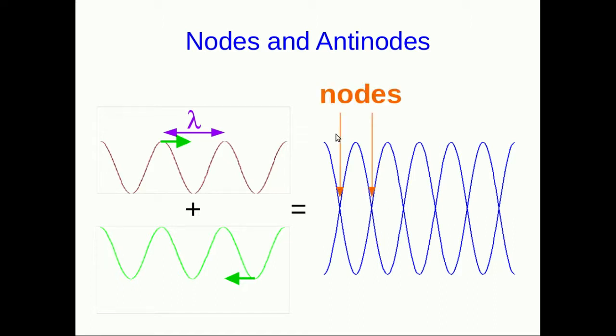These have names. We call the places where no oscillation occurs at all, nodes. And the places where maximum displacement occur are called antinodes.